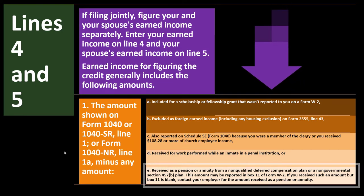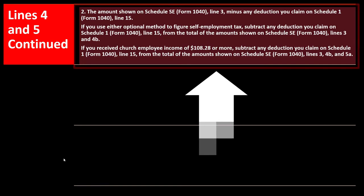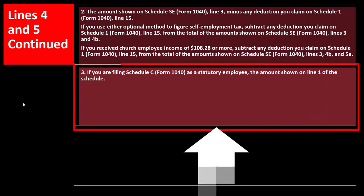That pension or annuity amount may be reported in Box 11 of Form W-2. If Box 11 is blank, contact your employer. For lines 4 and 5 continued: include the amount from Schedule SE Form 1040 line 3, minus any deductions claimed on Schedule 1 line 15 — that's typically Schedule C income. Special cases apply for statutory employees and church employee income of $108.28 or more.